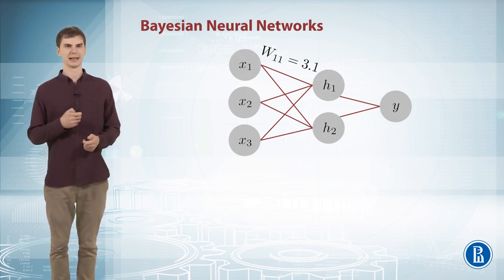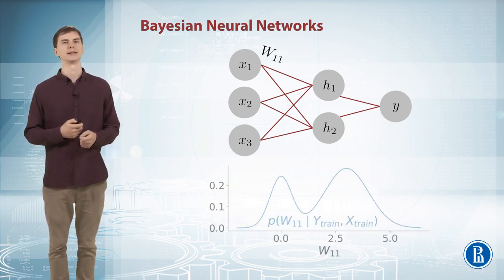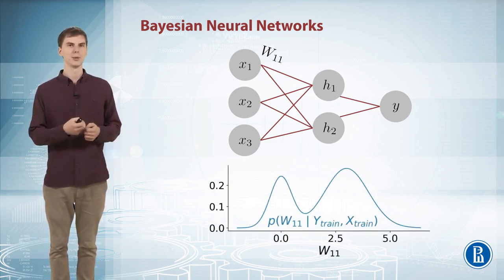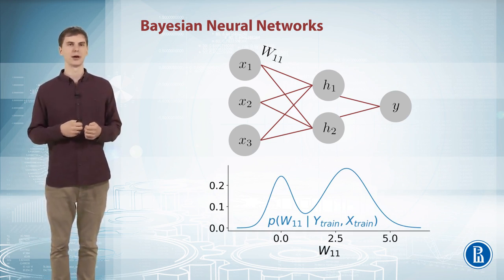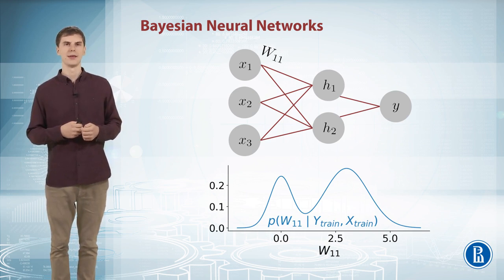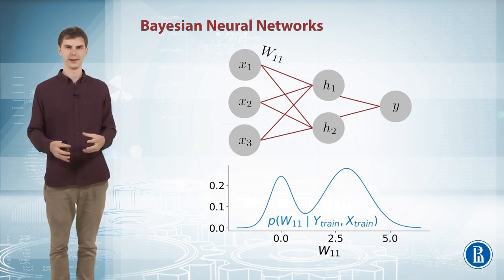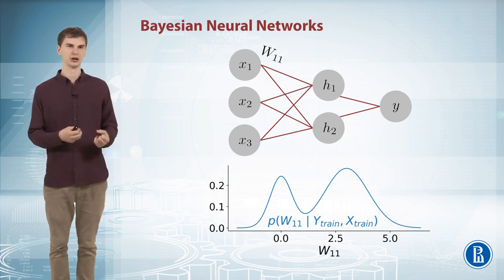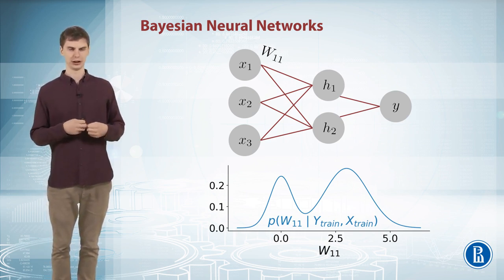Bayesian neural networks, instead of weights, they have distributions on weights. So we treat w, the weights, as a latent variable and then to do predictions we marginalize w out. And this way instead of just a hard set value for w, we'll have a distribution on w, a posterior distribution which we'll use to obtain the predictions.